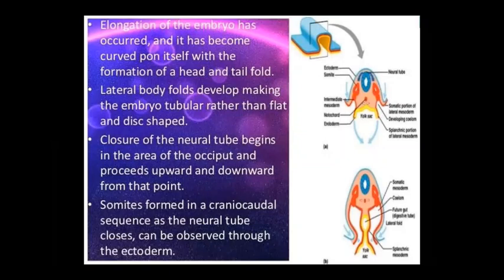The embryo elongates and then curves into a C-shaped form, developing head and tail folds. Lateral body folds also develop, and the embryo becomes tubular rather than flat. The neural tube begins to close in the occipital area, proceeding upward and downward from that point. Somites form in a cranio-caudal sequence as the neural tube closes, and can be seen through the ectoderm.